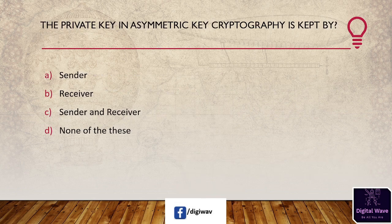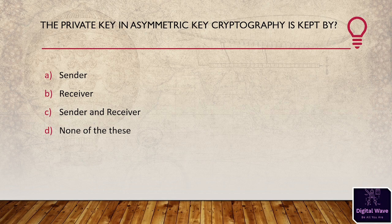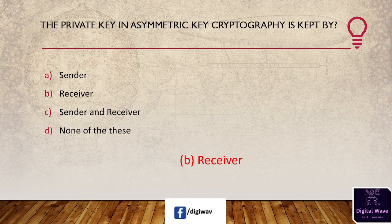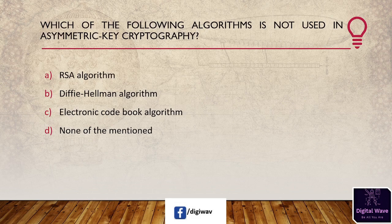Next question: in asymmetric key cryptography, the private key is kept by whom? Options are: sender, receiver, sender and receiver, and none of these. The answer is receiver — only the receiver keeps the private key; its purpose is to ensure that the message can only be decrypted by the intended receiver.